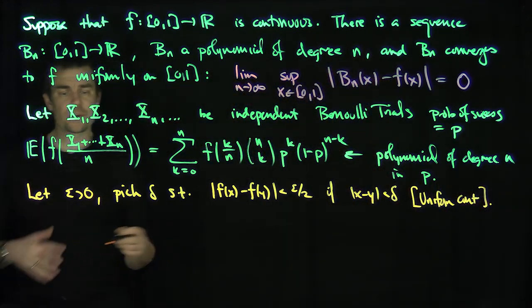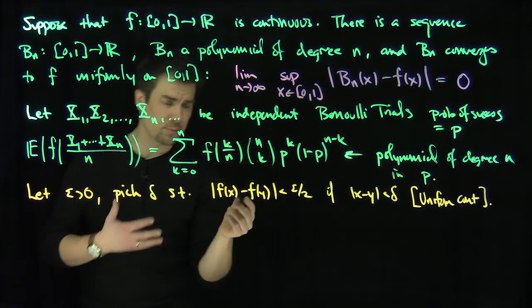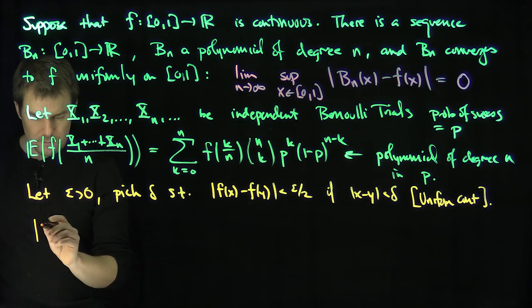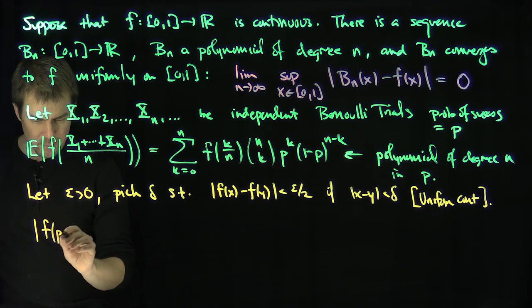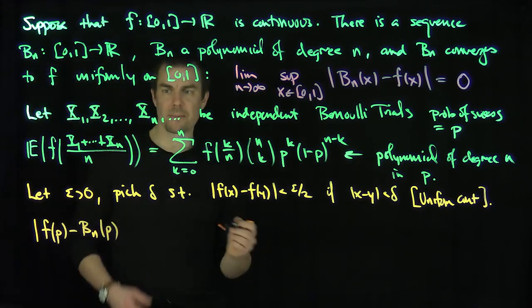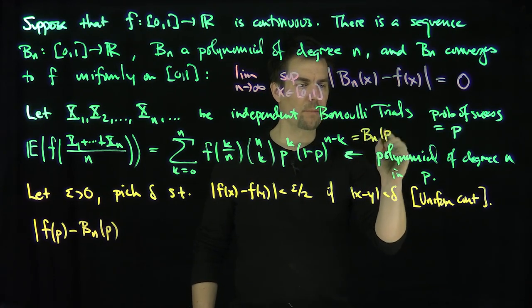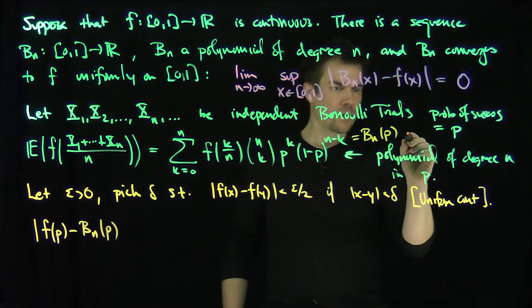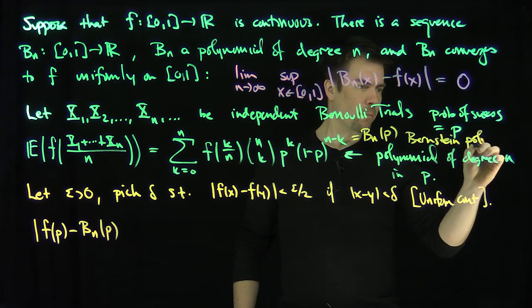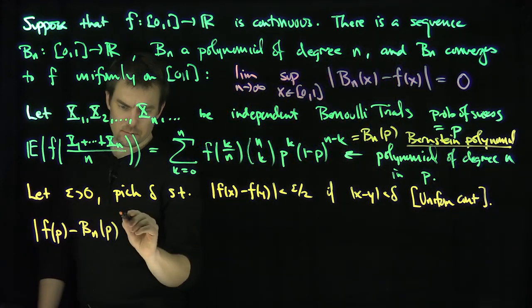Now I'm going to estimate the difference in f(x) and this function Bn. Let's consider the difference of f(p) and Bn(p), where my Bn is exactly just this expected value. I'm going to call this thing Bn(p). These are called Bernstein polynomials.